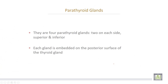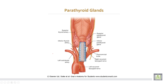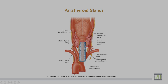Parathyroid glands: there are four parathyroid glands, two on each side — superior and inferior. Each gland is embedded on the posterior surface of the thyroid gland.